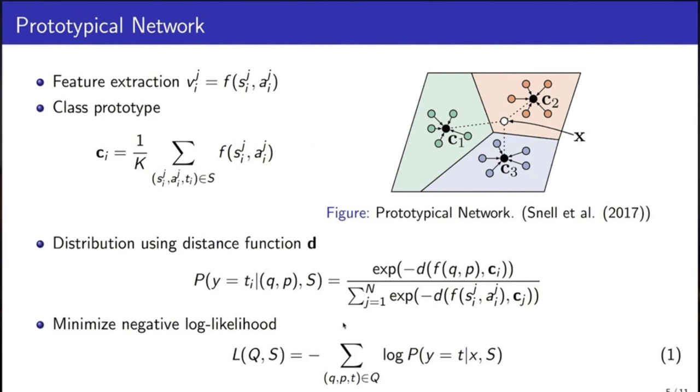For each class or cluster, it calculates a representative vector named prototype. Then it predicts the label of the query instance based on the distance distribution between the query instance and the prototype.